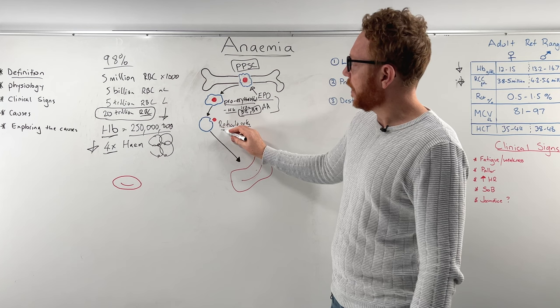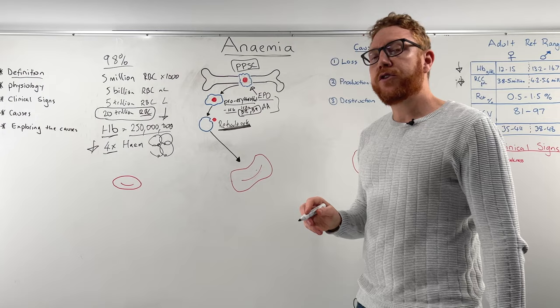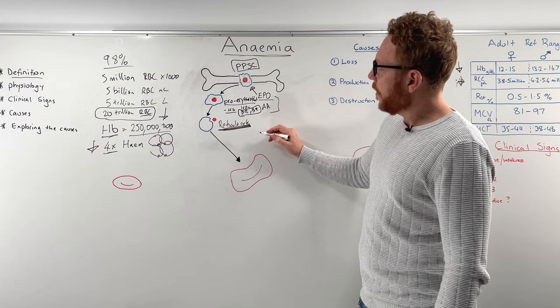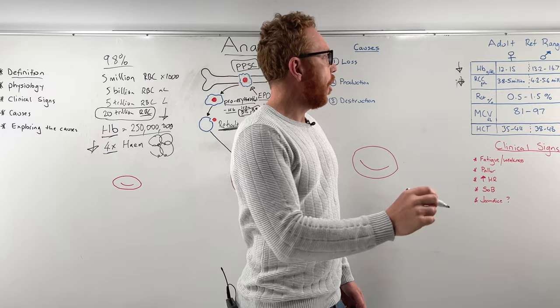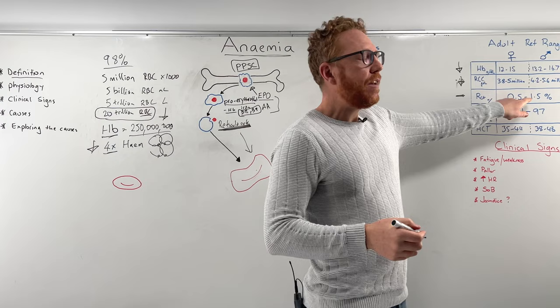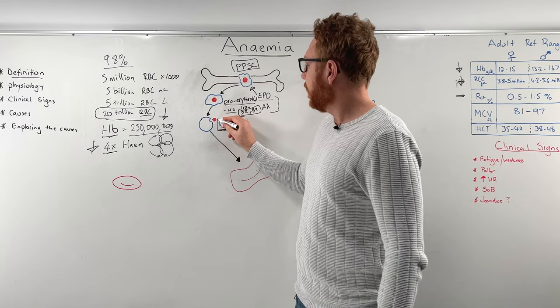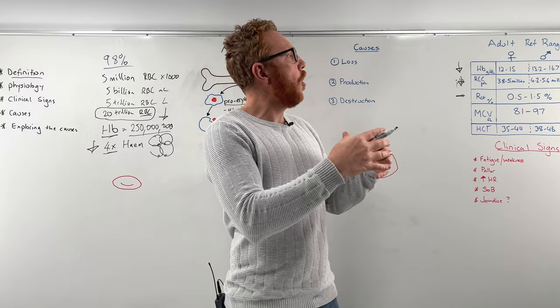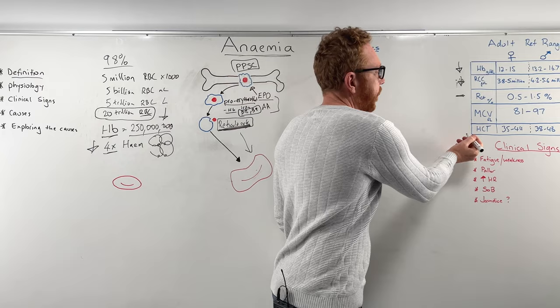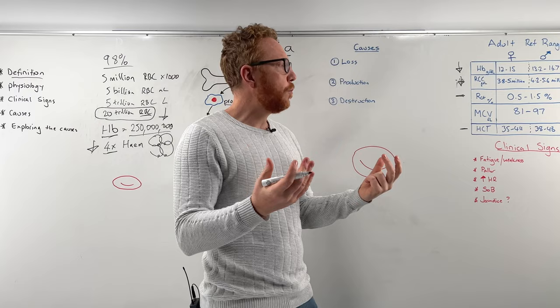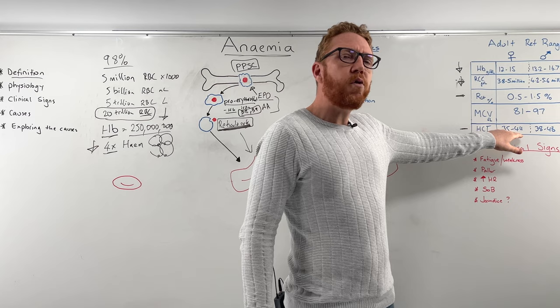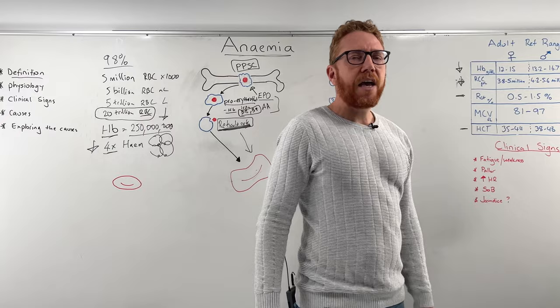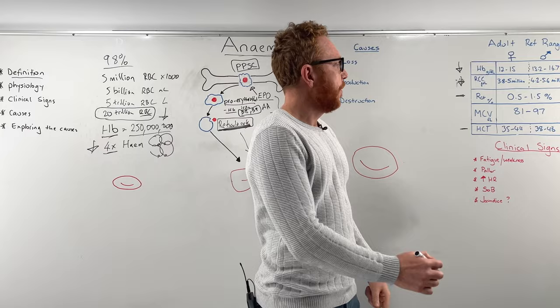The reticulocyte, which we can actually measure in the blood, gets pushed off into the blood where it spends a couple of days — maybe two days — before finally maturing into a red blood cell. The reticulocyte count should be about 0.5 to 1.5–2% of all your red blood cells in this immature form. If we take an overall count of red blood cells relative to your whole blood, this gives us the hematocrit — the percentage of red cells to total blood. For females, approximately 35–44%; for males, 38–48%. If this number drops, that is also indicative of anemia.